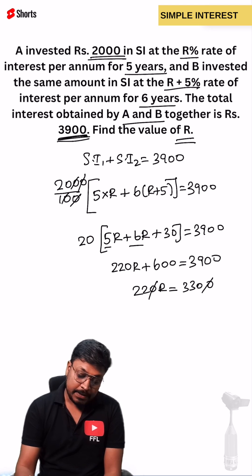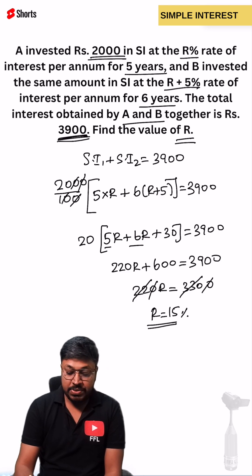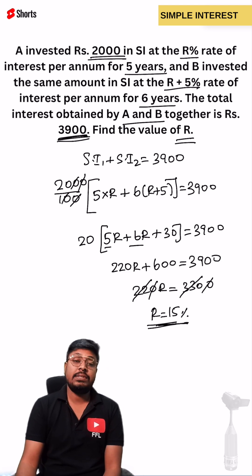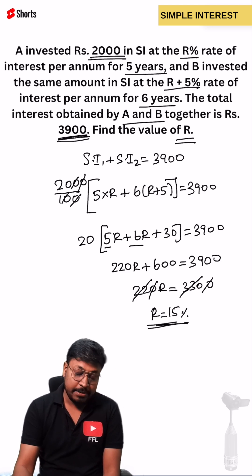Cancel them. R equals 3300 divided by 220, which is 15. R equals 15 percentage. The answer for this question is 15 percentage.